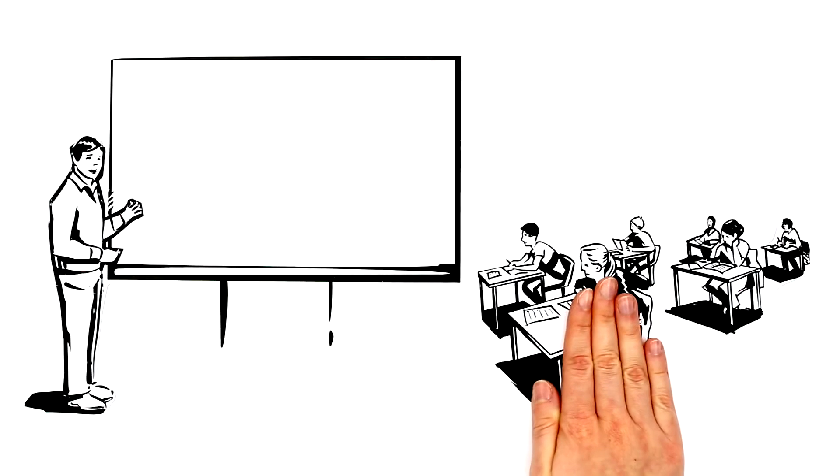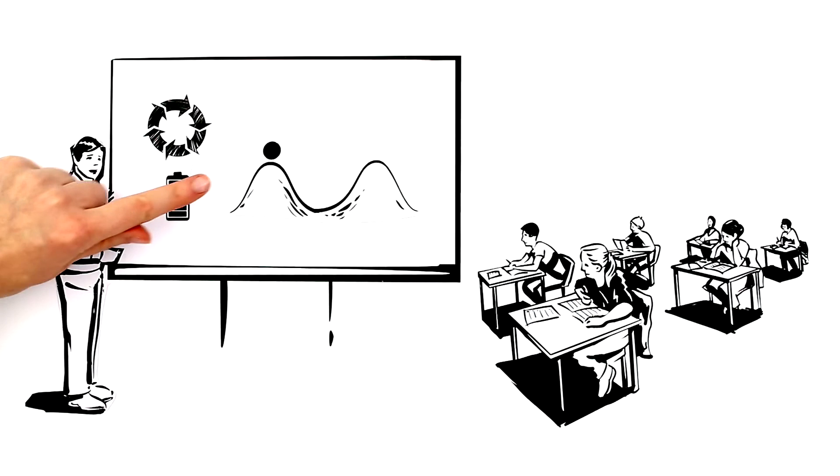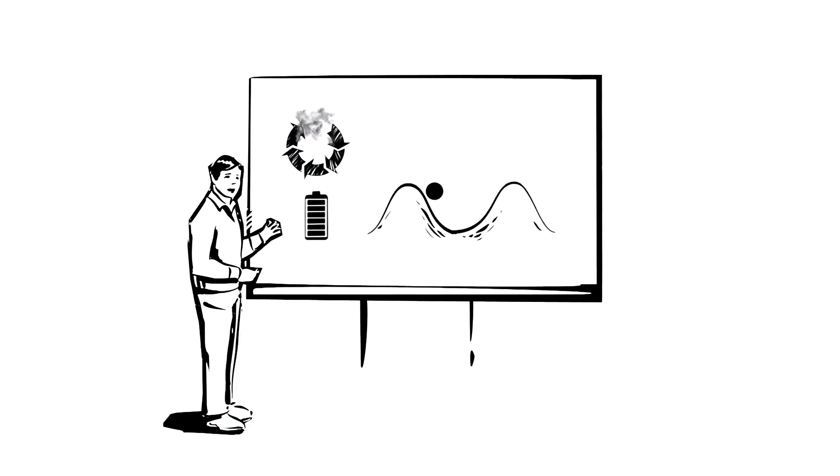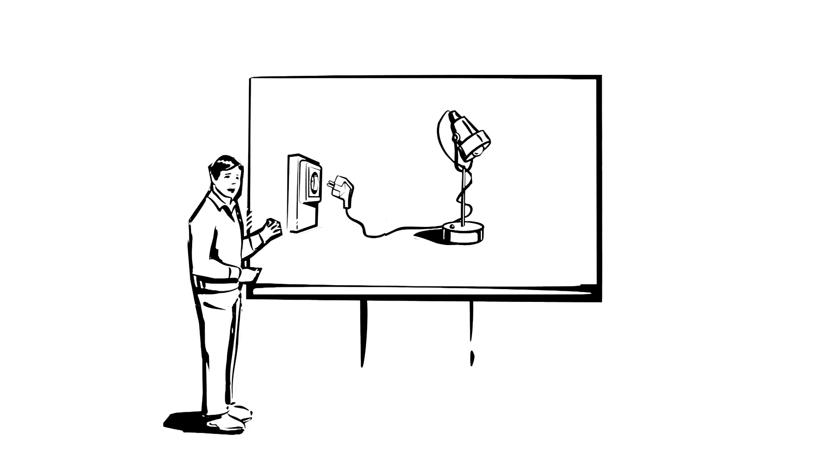In physics class we learned the energy of a system never vanishes. Energy is not lost, it merely takes on a different form. Electric power, meaning electric energy, is converted into light and heat energy inside a lamp. This principle of energy conservation is one of the fundamental laws of physics.